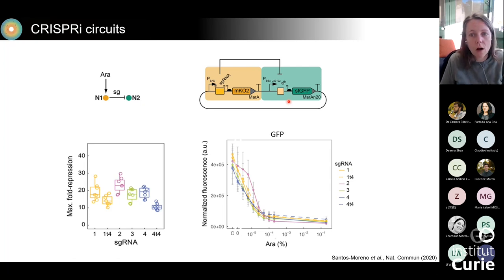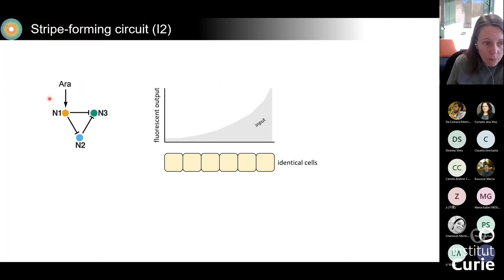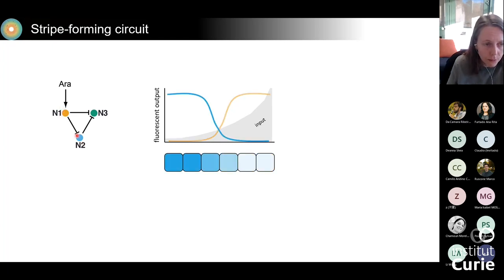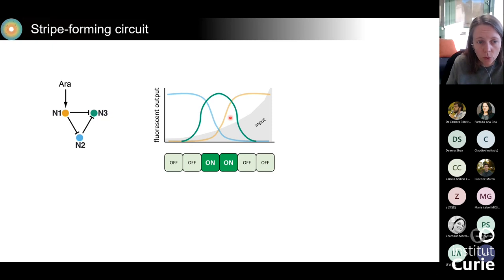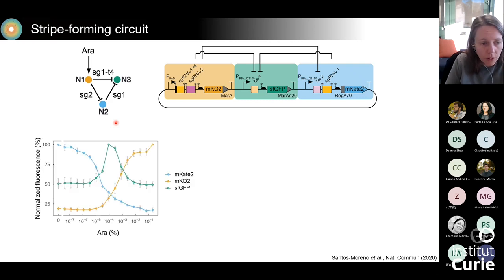We were then ready to test one of our stripe-forming circuits, focusing on the I2 topology. With increasing arabinose, we expect increased expression of the orange node. The blue node is usually on unless repressed by the orange one, so we expect a decrease. The green node is repressed by both orange and blue, so we only expect high expression of the green node at intermediate concentrations where both blue and orange are not too high — that's how we get the stripe.